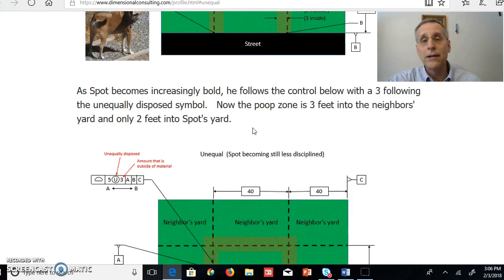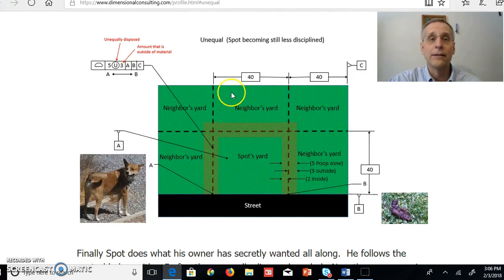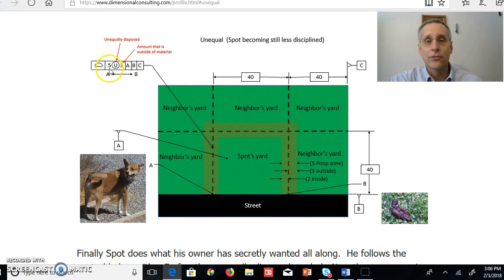And as Spot becomes more undisciplined yet, the poop zone is going to be described by this call-out. And in this case, it's still five feet wide, but now it's three feet outside of his yard, three feet into the neighbor's yards, and only two feet inside of Spot's yard.